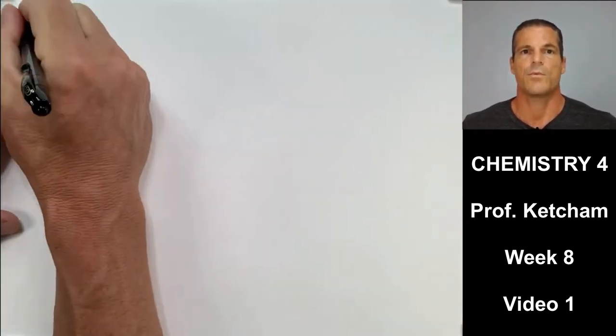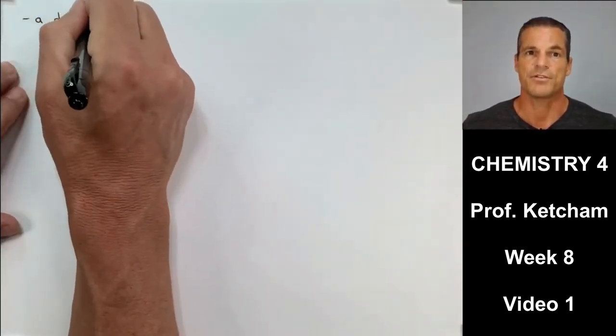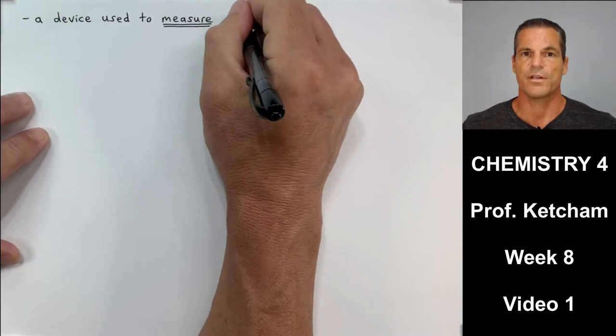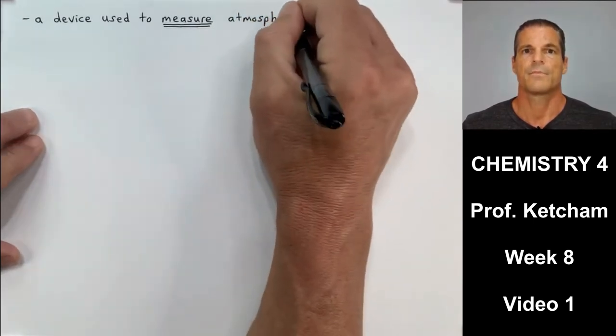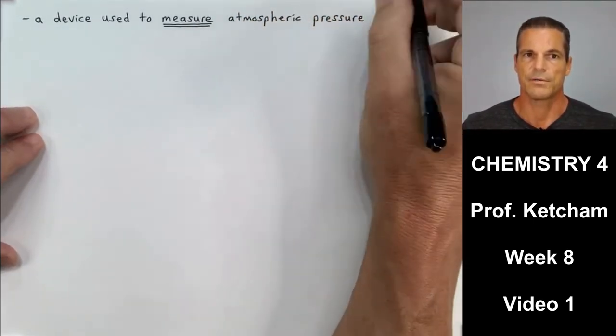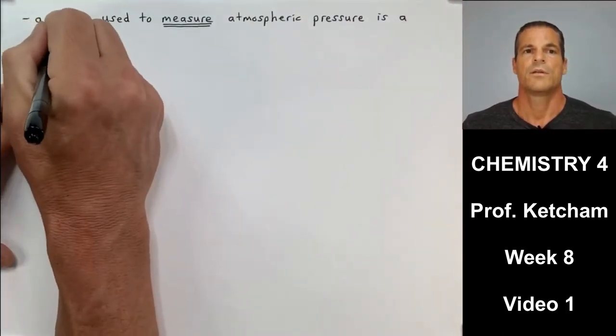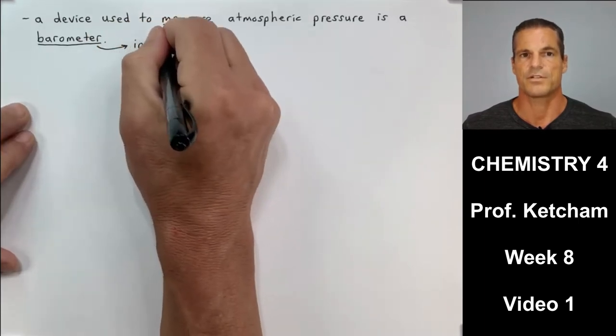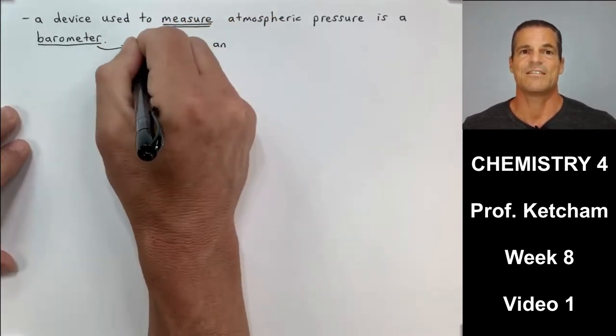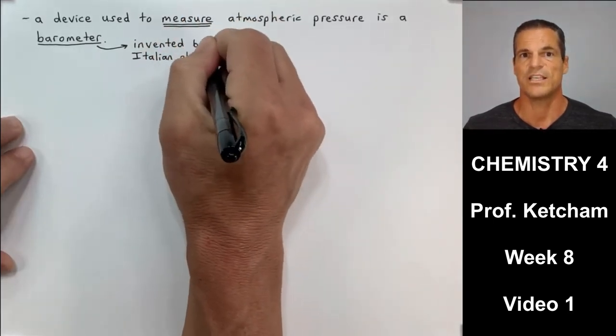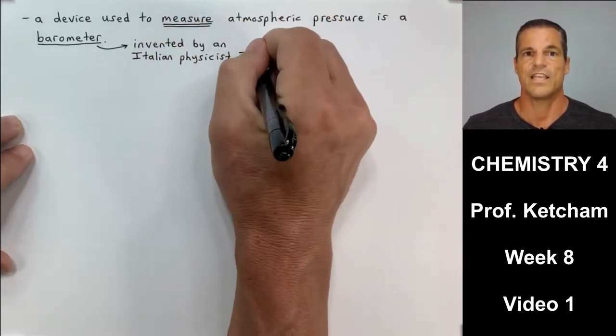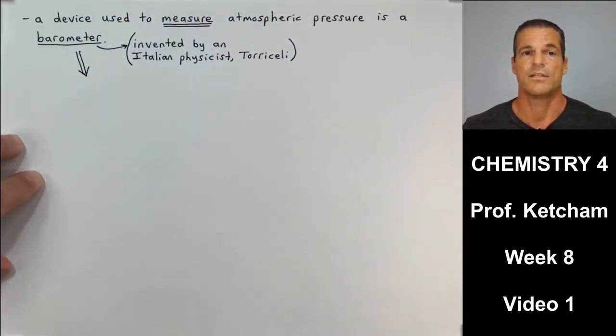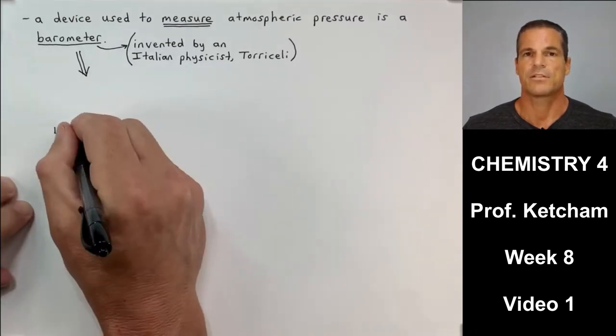Now, page two of today's notes, we want to talk about how pressure is measured. A device used to measure atmospheric pressure is called a barometer. The barometer, by the way, was invented by an Italian physicist named Torricelli. The first four letters of his name are T-O-R-R. That's one of the units that we use in units of pressure. But anyway, back to the barometer.